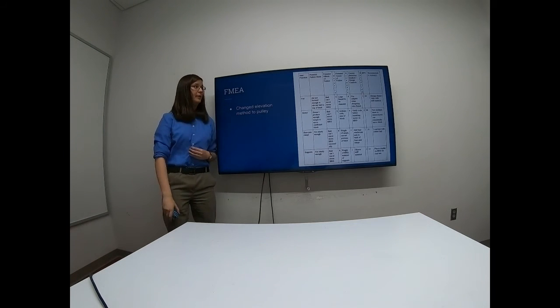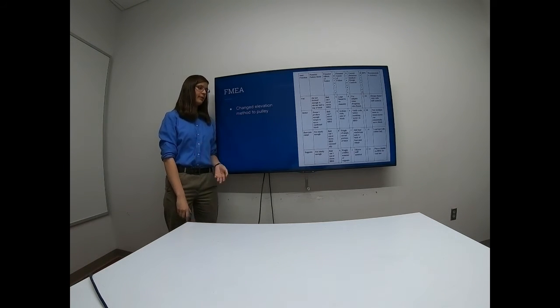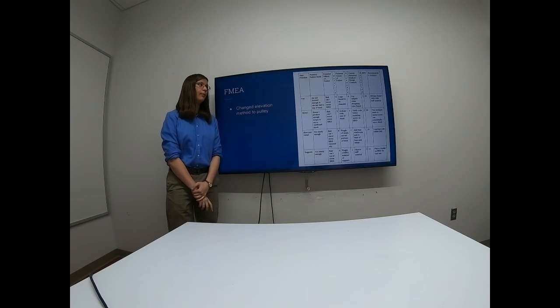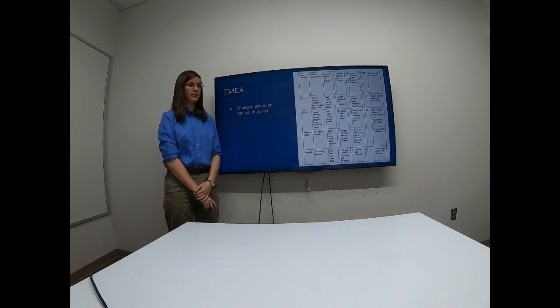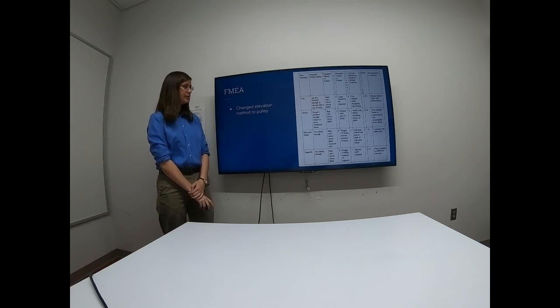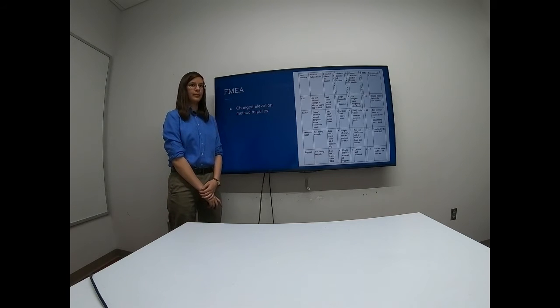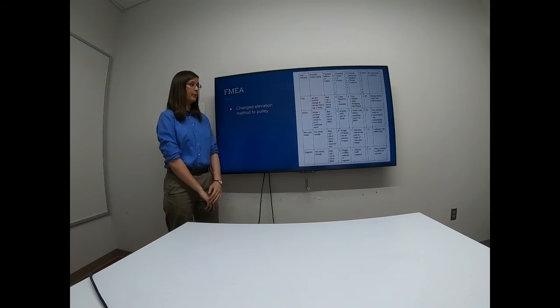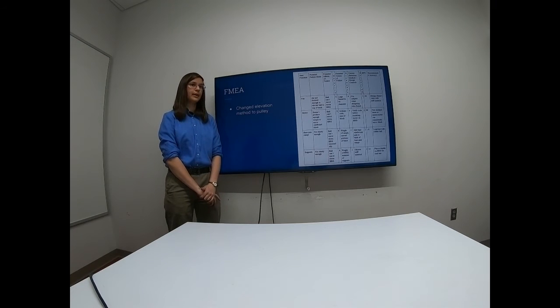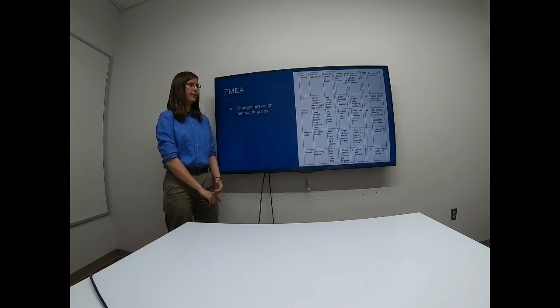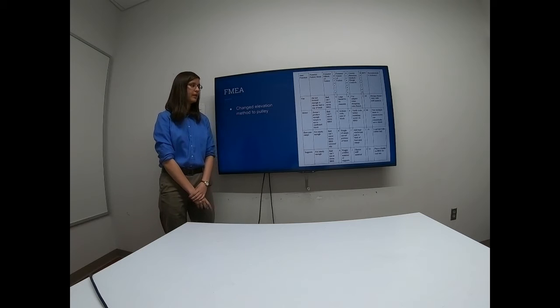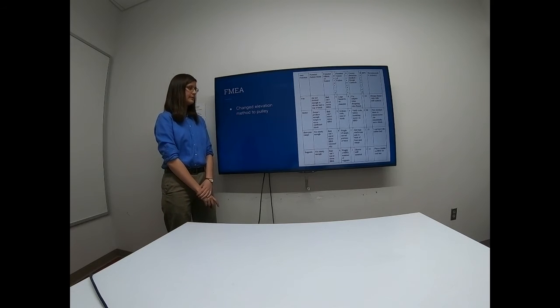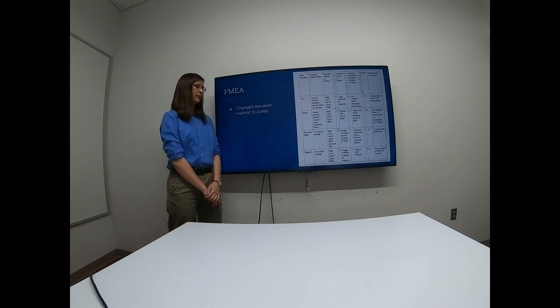So as Brittany mentioned earlier, the failure we ran into with one of our original components of our BRG was the fan. So we decided to replace that with a motor drawn pulley system. So based on our original FMEA from DP2, we thought that the motor would be the most problematic component of our BRG, but it turned out that the fan was the component that failed.